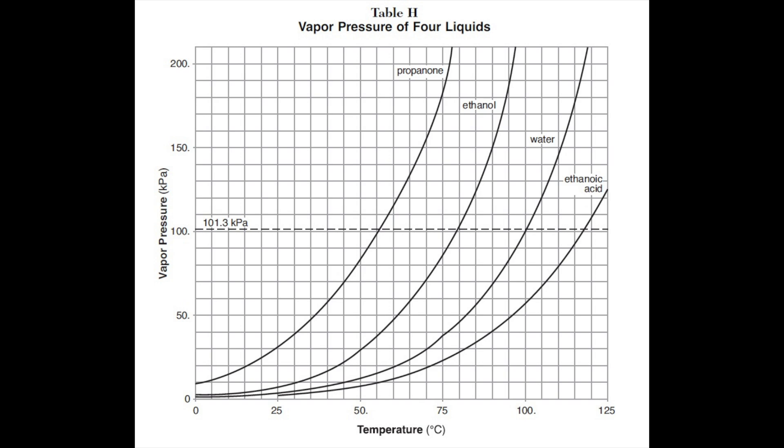Notice that ethanoic acid has the highest normal boiling point. Therefore, we can infer that it has the strongest intermolecular attractions.